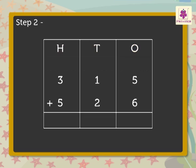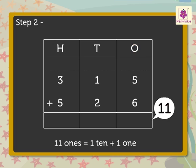Step 2: Add the digits in the ones column. That is, 5 plus 6 is equal to 11. Regroup the 11 ones. That is, 11 ones is equal to 1 ten and 1 one. Carry the 1 ten to the tens column and write 1 in the ones column.